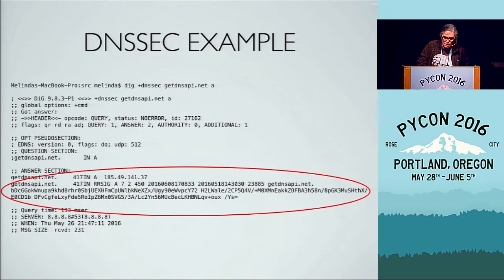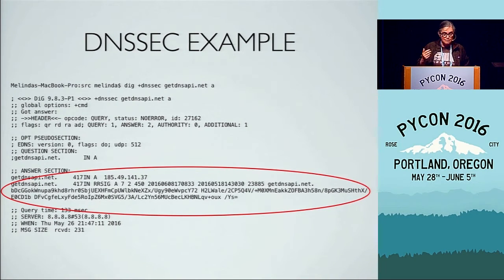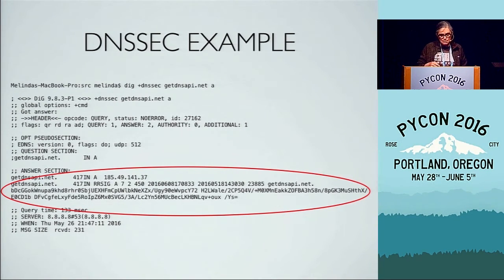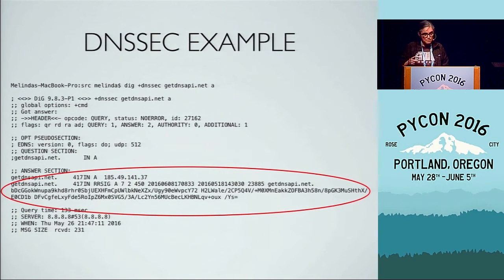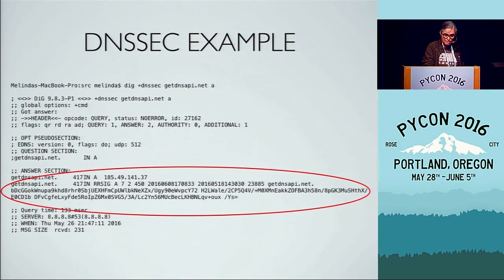Here's a DNSSEC example. In the query, I've said 'dig +dnssec getDNSAPI.net A' — get the IPv4 address. What comes back is the address and a signature, plus additional records containing public keys that I can use to validate that signature and prove that the entity that generated that signature does, in fact, have the private key associated with that domain.